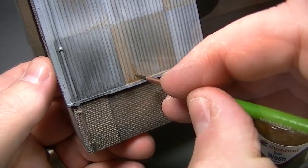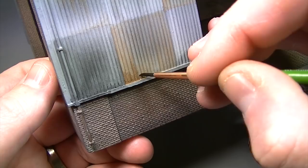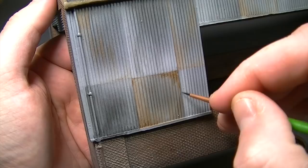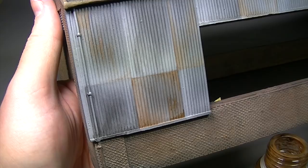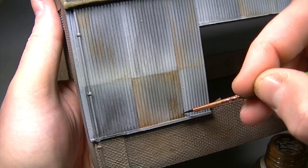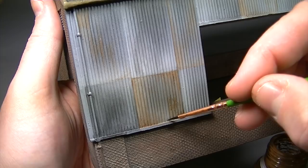The weathering powder and enamel wash mixture is dabbed onto the surface in very controlled tight areas and then blended together with a brush dampened with enamel thinners. One of the biggest advantages of using Humbrol enamel washes and Humbrol weathering powders in this fashion is just how translucent the colour remains, plus the added advantage of being able to work with enamel thinners over the top to thin the colour out even more. This means we remain in complete control of the rusting effect from start to finish, adding more mixture or removing it with thinners as we see fit.